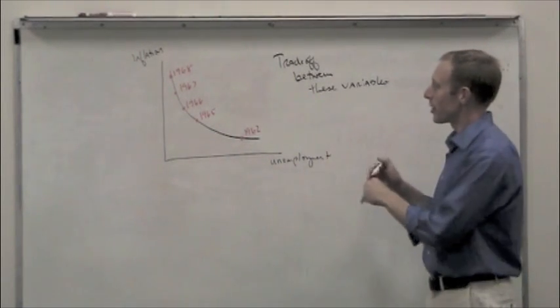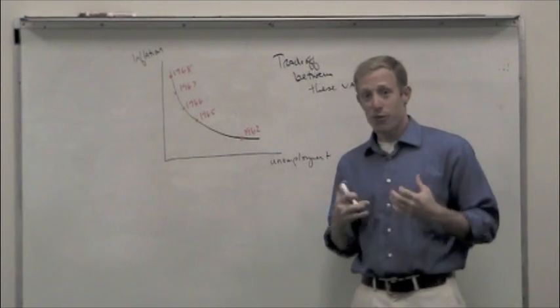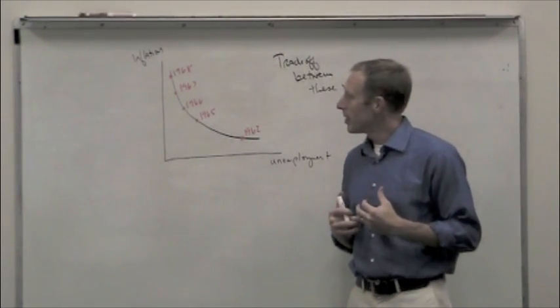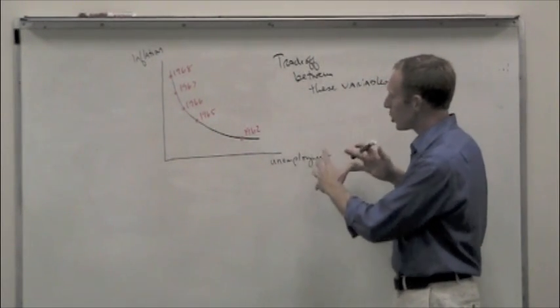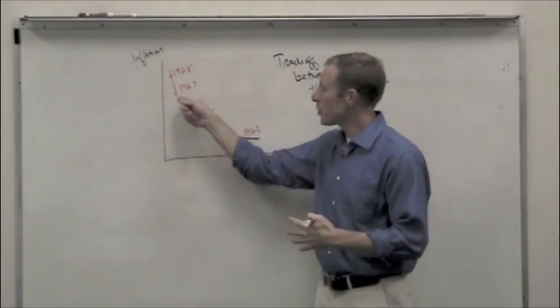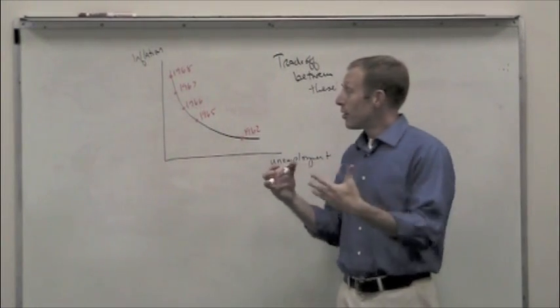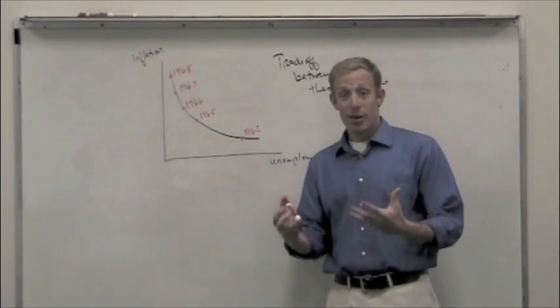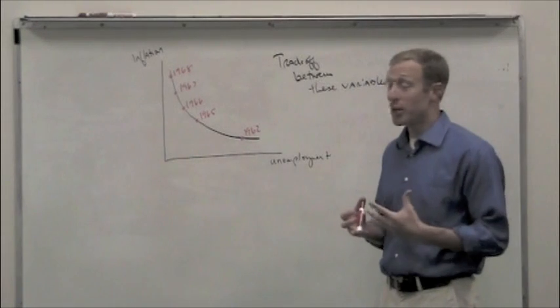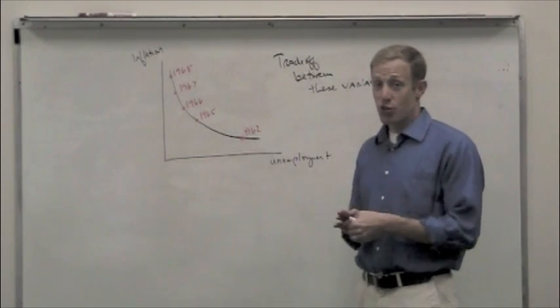Now, of course, policymakers see this. They realize the implications. They say, wow, we can potentially really fine-tune the economy based on this inflation-unemployment trade-off. And if we can get some specific data to tell us how much inflation leads to how much of a reduction in unemployment, then we've got some really important information, some really important policies that we can write, and we can almost with certainty figure out what this trade-off is.